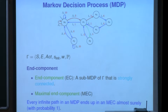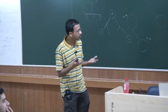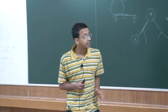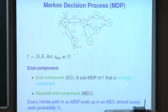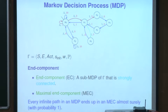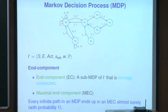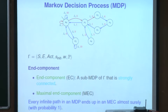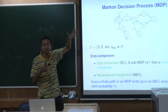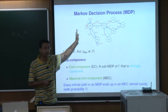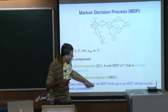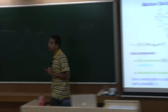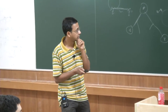An end component is a sub-MDP that is itself strongly connected. The maximal end component (MEC) is one not included in any other end component. It is well known that every infinite path in an MDP almost surely — with probability 1 — ends up in one of the end components. This is true even if the MDP is not itself an end component. We will use this fact later.